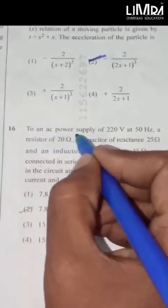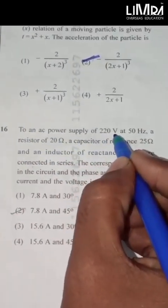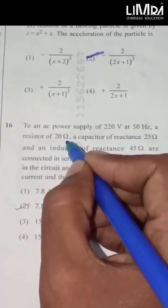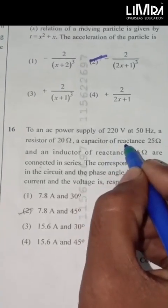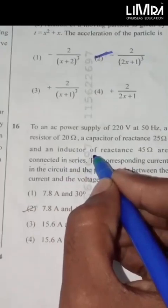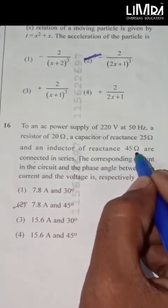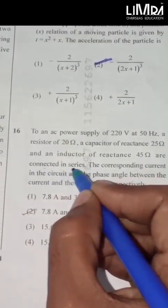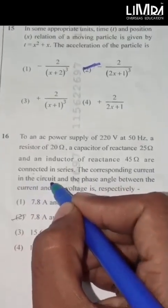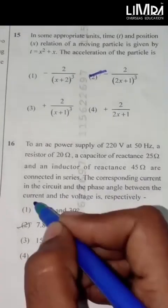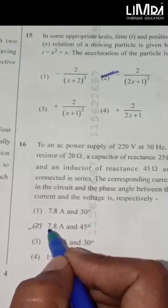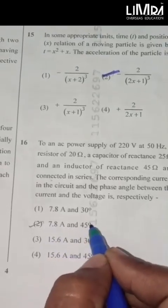To an AC power supply of 220 volt at 50 hertz, a resistor of 20 omega, a capacitor of reactance 25 omega and an inductor of reactance 45 omega are connected in series. The corresponding current in the circuit and the phase angle between the current and the voltage is respectively 7.8 A and 45 degree.